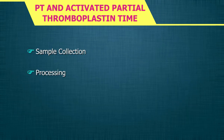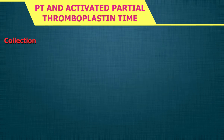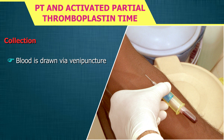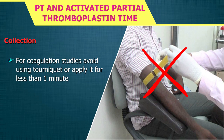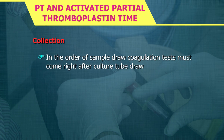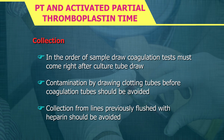Sample collection, processing, storage, and transportation for coagulation studies is very important to arrive at a correct result. Blood is drawn via venipuncture. For coagulation studies, avoid using a tourniquet or apply it for less than 1 minute. In the order of sample draw, coagulation tests must come right after culture tube draw. Contamination by drawing clotting tubes before coagulation tubes should be avoided. Collection from lines previously flushed with heparin should also be avoided.